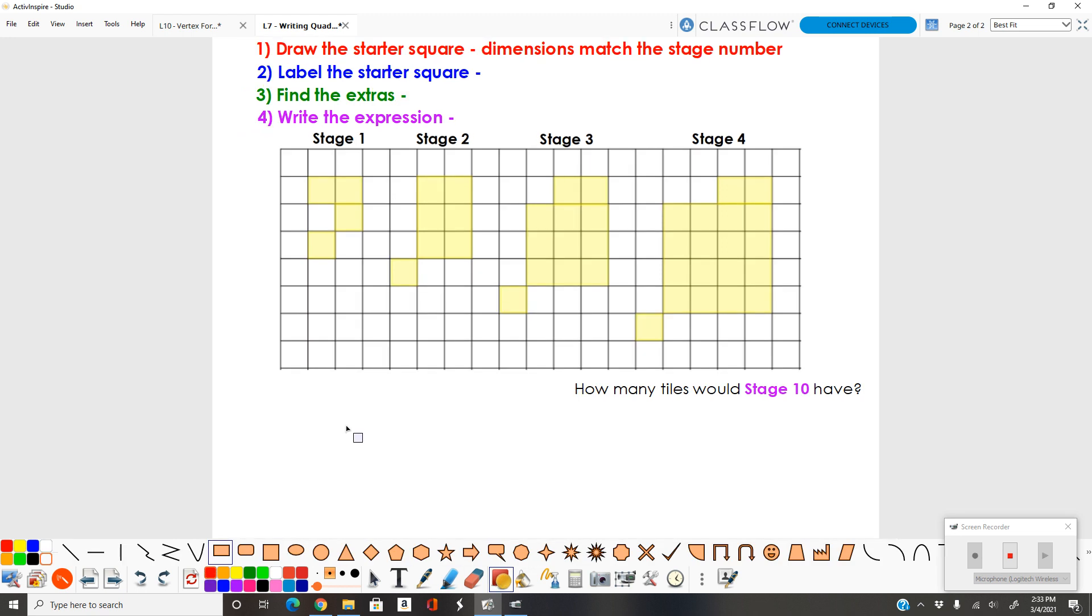Stage one starts out exactly the same. Draw your starter square. The dimensions must match your stage number. When you have stage 1, and sometimes stage 2, it's kind of hard to know where your starter square goes. The bigger the shape, the easier it is to find your starter square, because for stage 3, you have to have a 3 by 3 square. There's only one place to put a 3 by 3 square. Same thing, stage 4, there's only one place where I could draw my starter square.